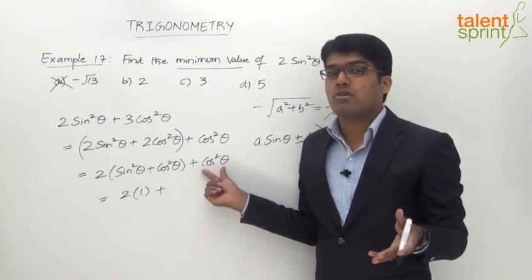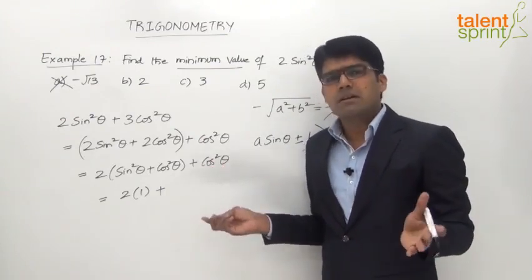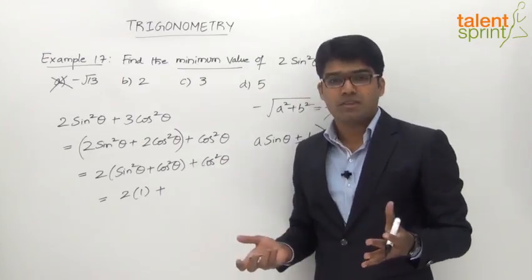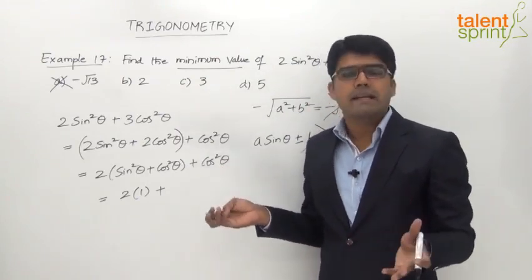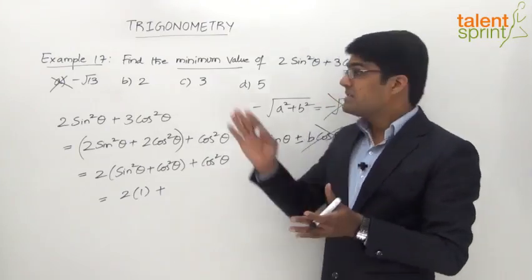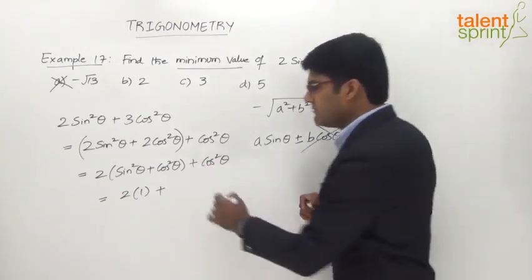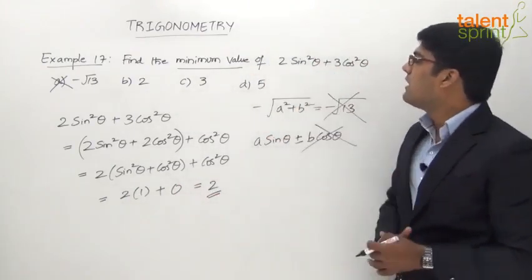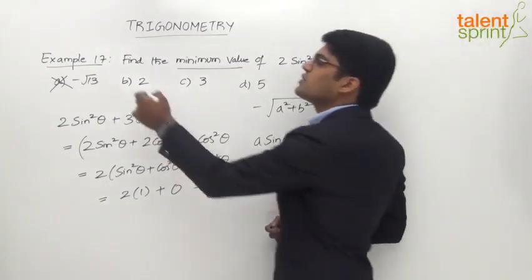Since we are looking for the minimum value and cos²θ cannot be less than 0, we consider cos²θ = 0. This gives us 2 + 0 = 2. Hence, the minimum value of the given trigonometric equation 2·sin²θ + 3·cos²θ is equal to 2, which is option B.